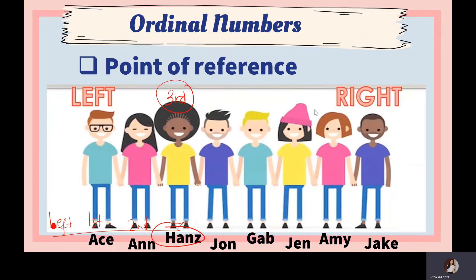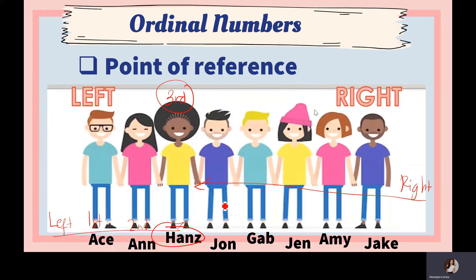That position — third — is from the left. But if you are asked what is the position of Hands from the right, the answer is different. Counting from the right to Hands: first, second, third, fourth, fifth, sixth. So from the right, the position of Hands is sixth. You have to read the instruction carefully and follow the point of reference.